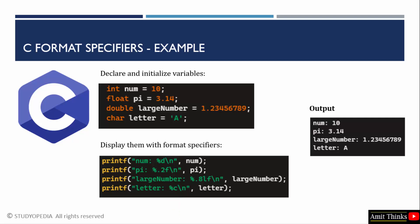In this way, the format specifiers work in C language. int, float, double, char are one of the most popular data types used in C language. And these are the format specifiers for them.